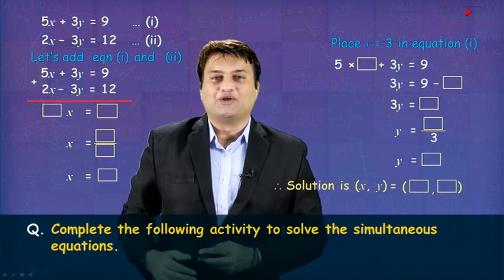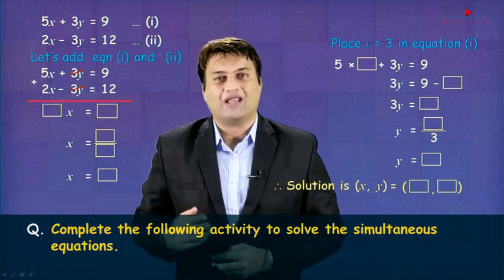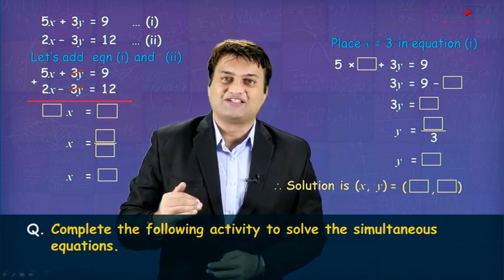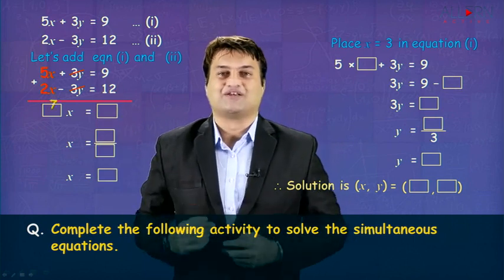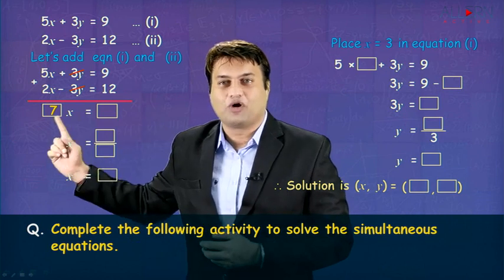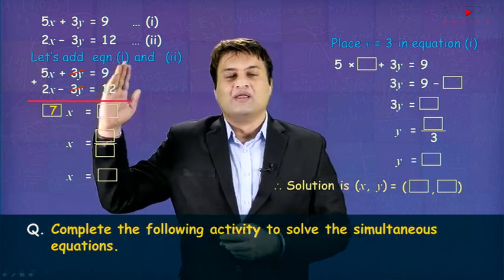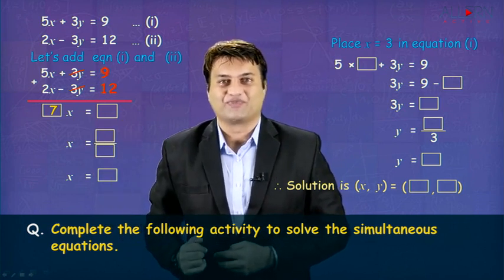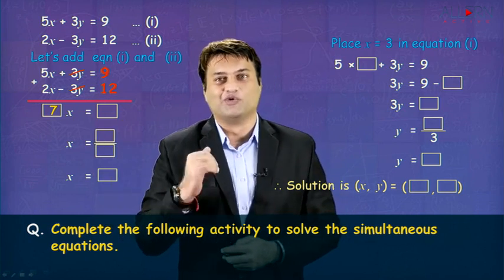When we add the two equations, what happens is plus 3y and minus 3y will get cancelled. What remains is 5x plus 2x, that's 7x. So you just need to write 7 in the block because x is already given in the question. 9 plus 12, that's 21 in the next block. So you get 7x is equal to 21.